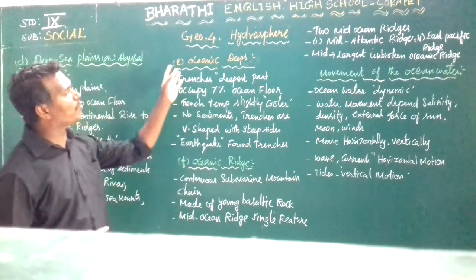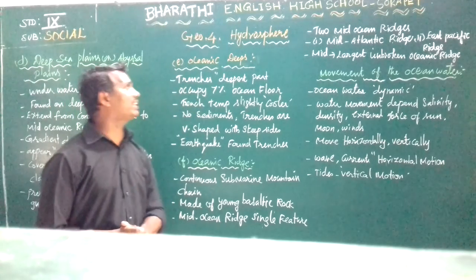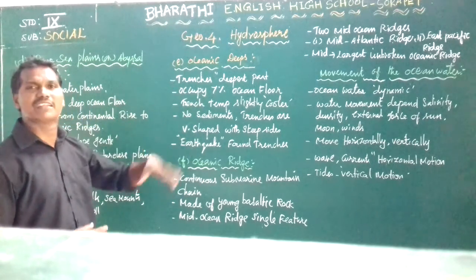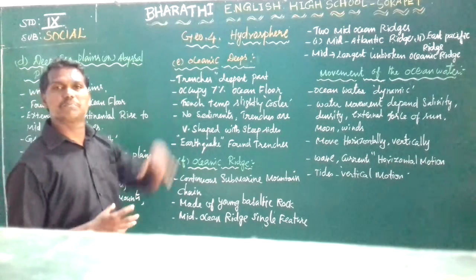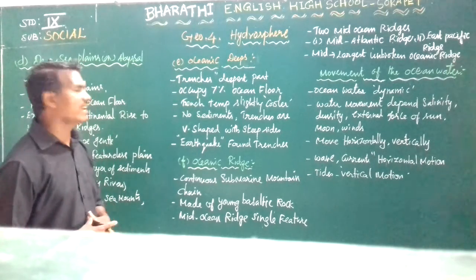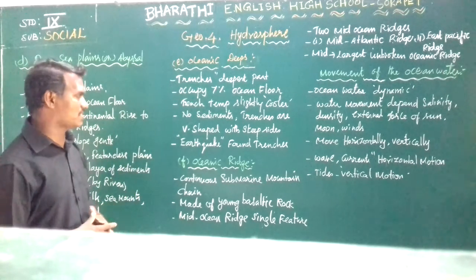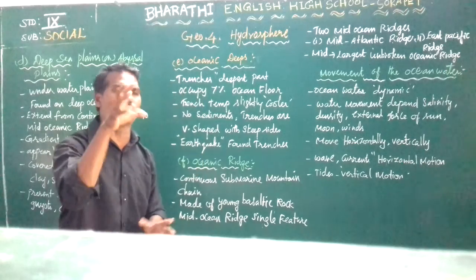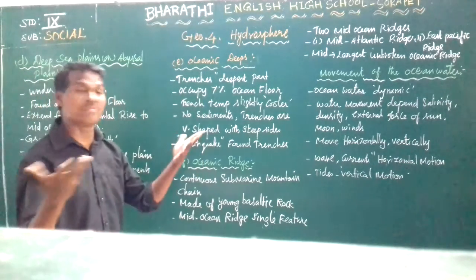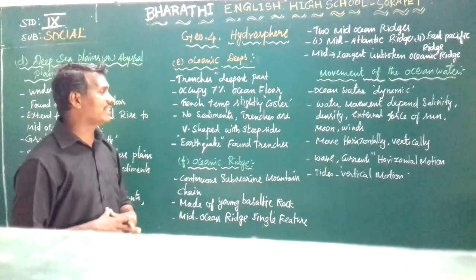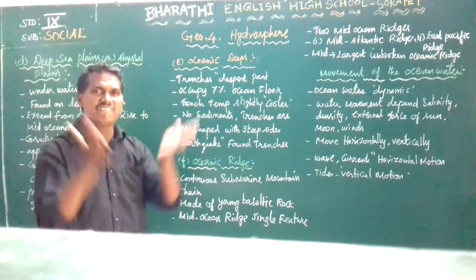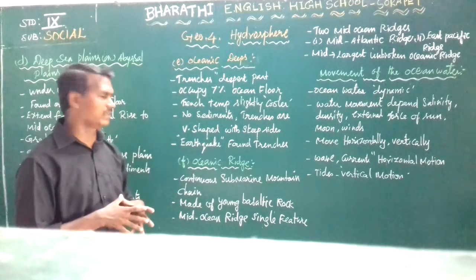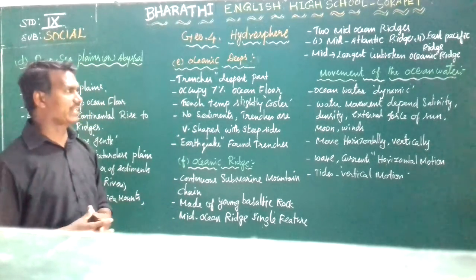So what is the meaning of oceanic deep? Oceanic deep means the trenches, which are the deepest part. The temperature of the trenches is slightly cooler and there is no sediment. The trenches are V-shaped and echo is not common here.